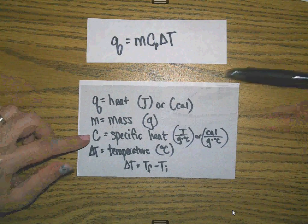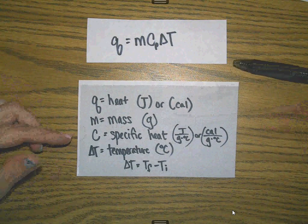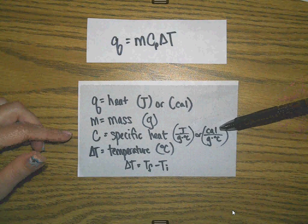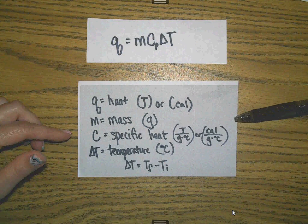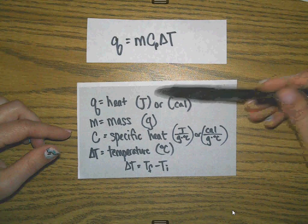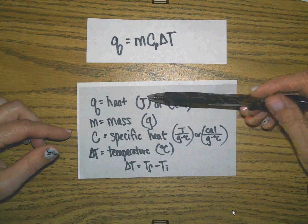This is a capital C, and capital C stands for specific heat. There are two possible units: joules per gram degree Celsius or calories per gram degree Celsius. Which of those two that you pick depends entirely upon whether or not you have heat measured in joules or calories.